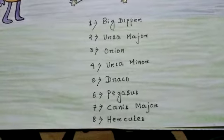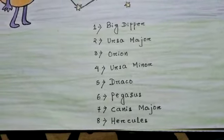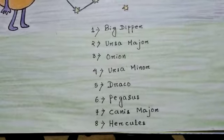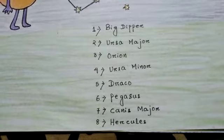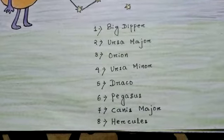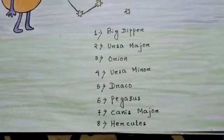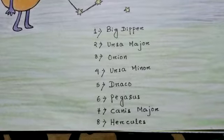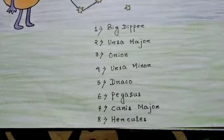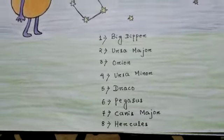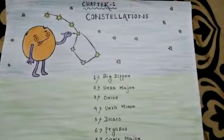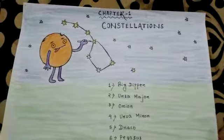So these are the answers of Chapter 1: number one is Big Dipper, number two is Ursa Major, number three is Orion, number four is Ursa Minor, number five is Draco, number six is Pegasus, number seven is Canis Major, and number eight is Hercules. Now let us move to Chapter 2.